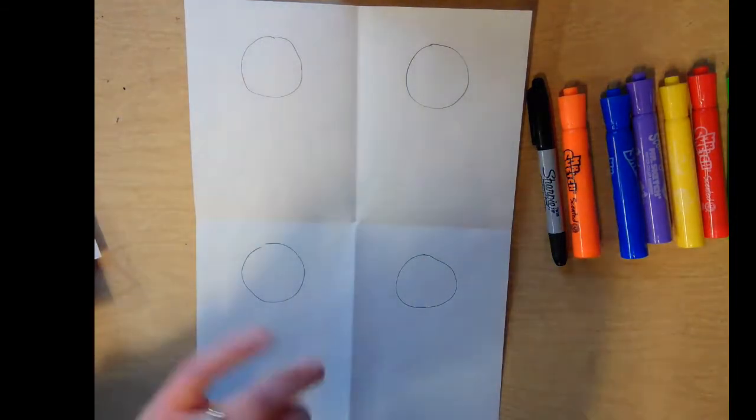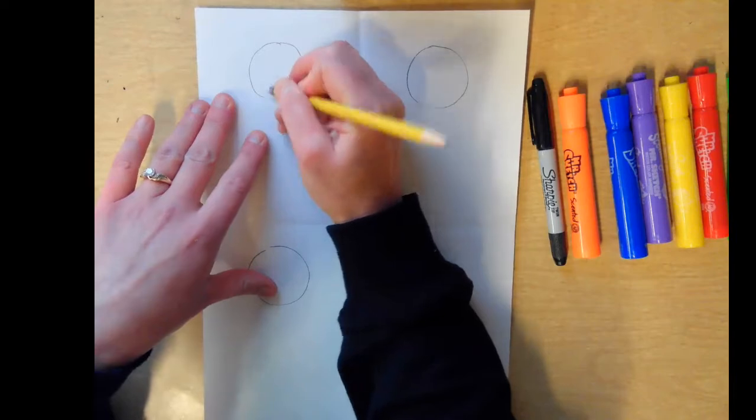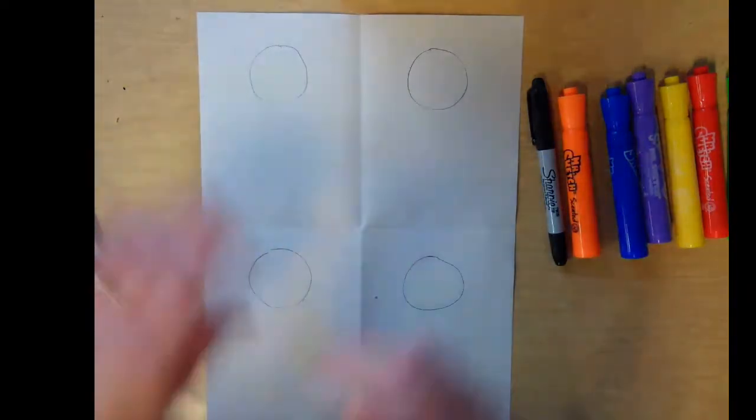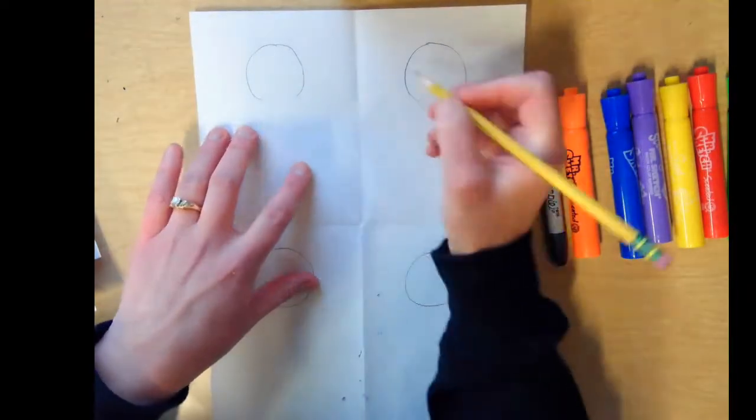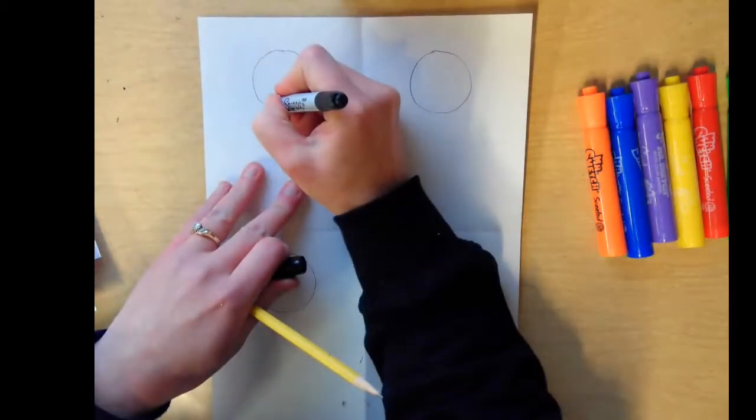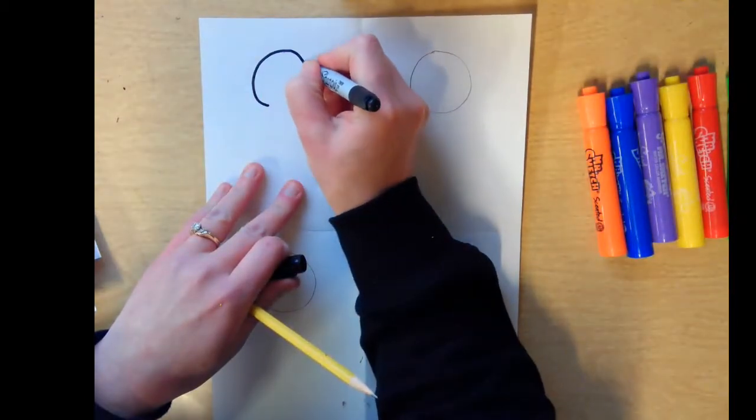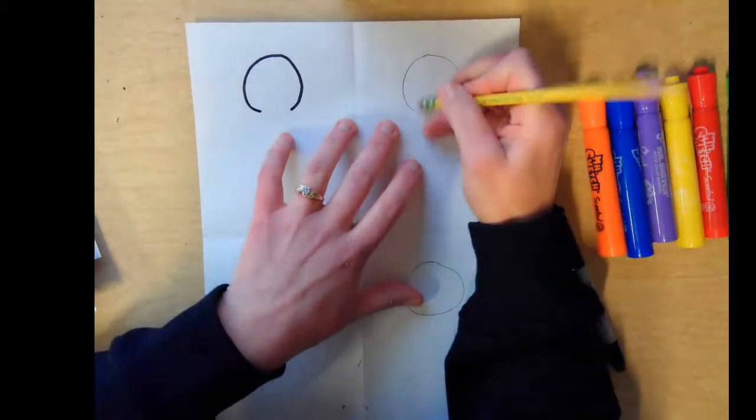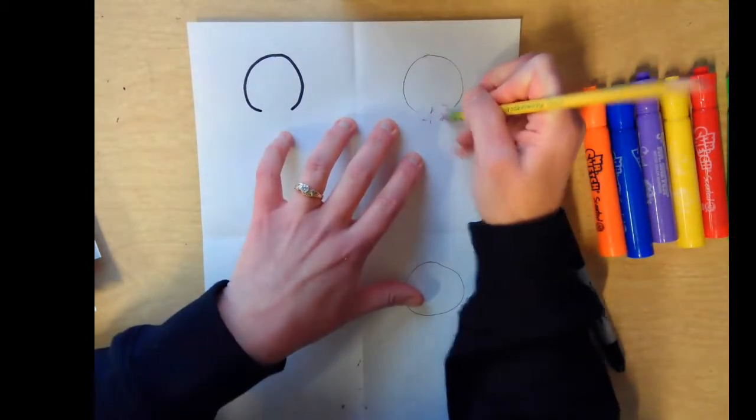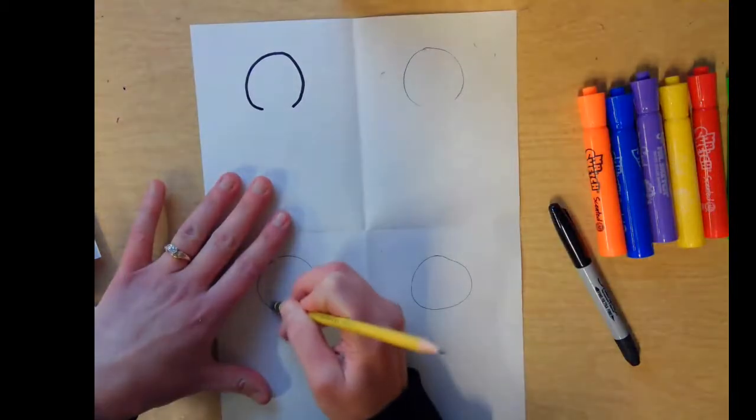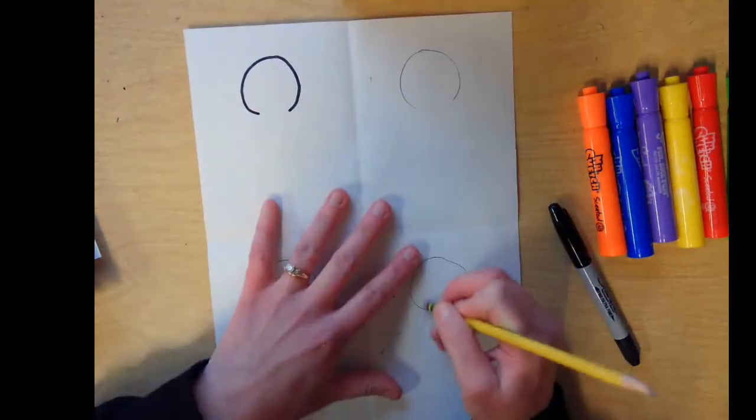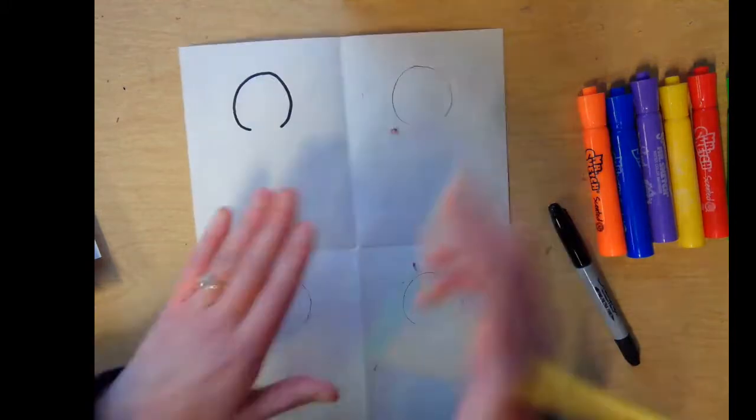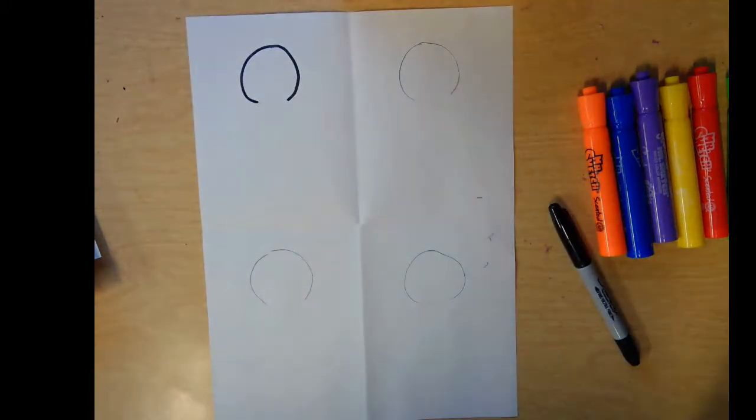Now, the next thing that we need to do is we are going to erase this bottom part of our circle. And I am going to do it. I'm going to outline it with a block so you guys can see it here. So here's what we're looking for is something like that for each one. So go ahead and do a little erase here for each one. And then we'll be ready to draw the rest of our bodies.